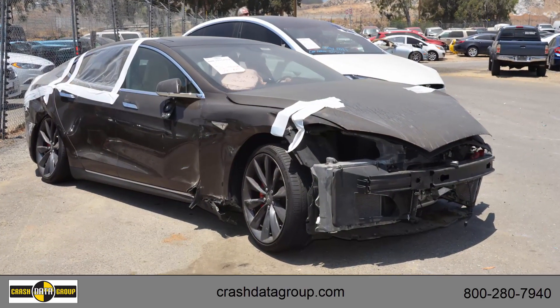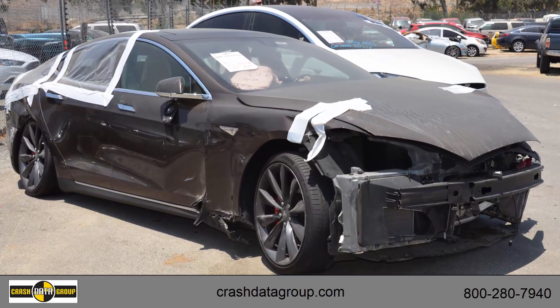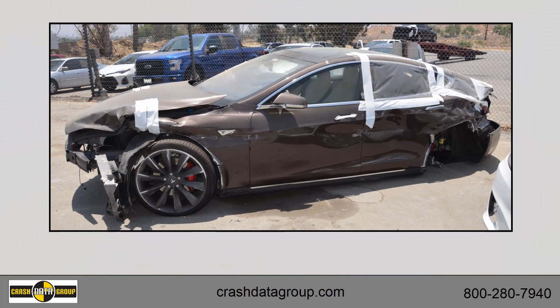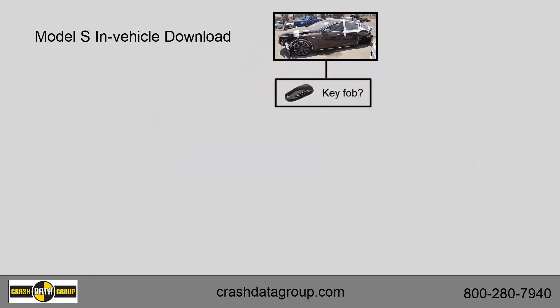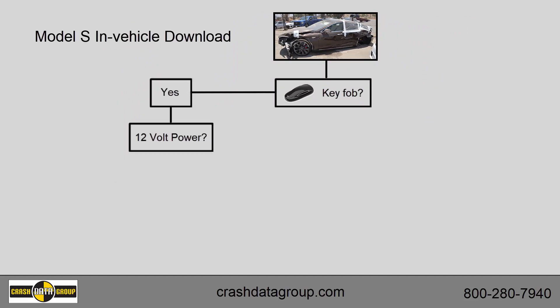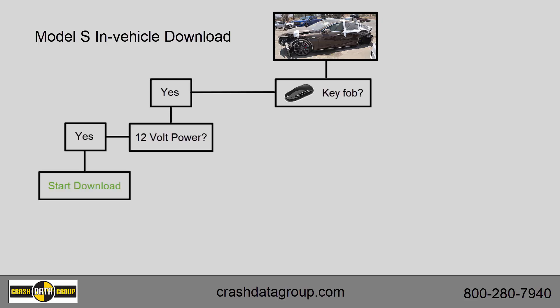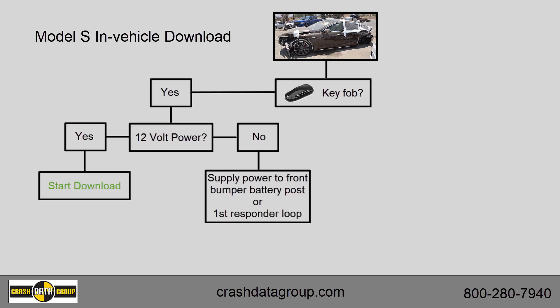As with any download, you may encounter some unforeseen issues you'll have to overcome. The first thing you'll need to determine to perform an in-vehicle download is: do you have the key fob for the vehicle? If you do, you'll need to determine if the car has 12-volt power available. If it does, you can proceed with the in-vehicle download. If it doesn't, you'll need to supply supplemental 12-volt power through a battery post located on the front bumper or directly to the RCM through the first responder loop.